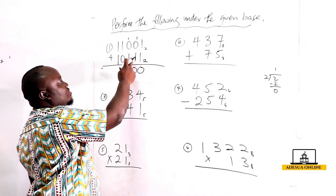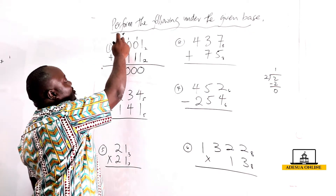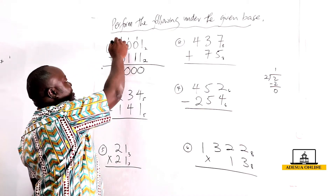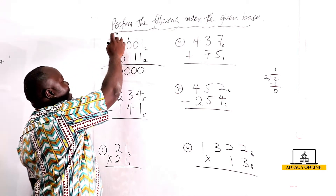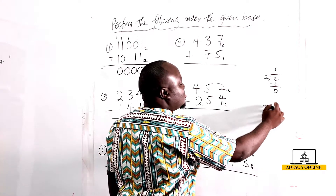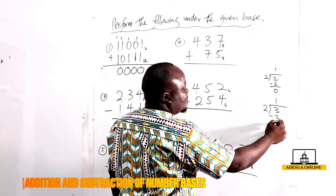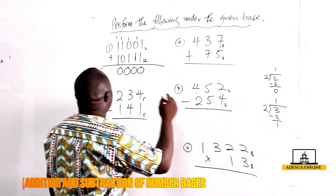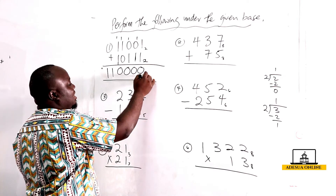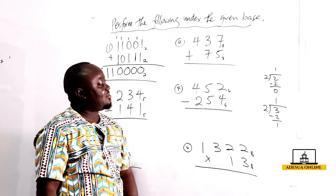Again, one plus one is two; two in base two gives us zero carry one. Again, one plus one is two, zero carry one. One plus one is two, zero carry one. Then one plus one plus one is three; three divided by two gives one remainder one, so we have one one. This gives us 11000 to the base two.